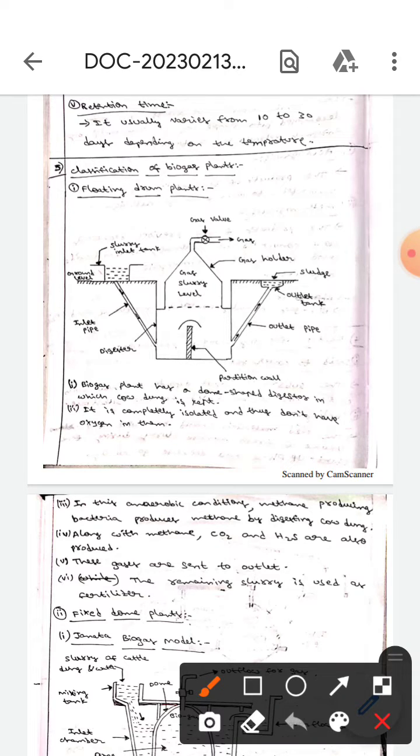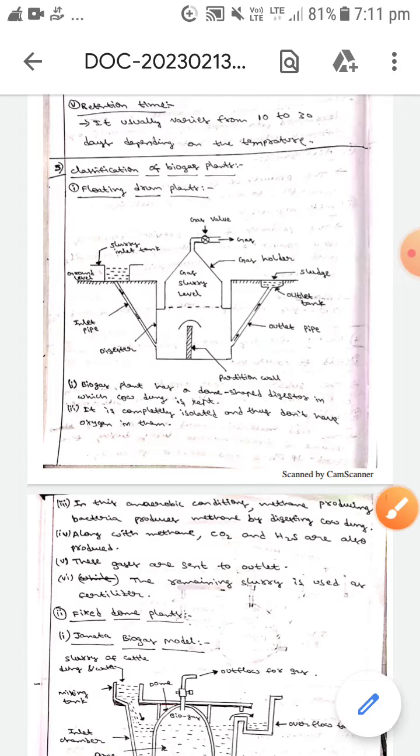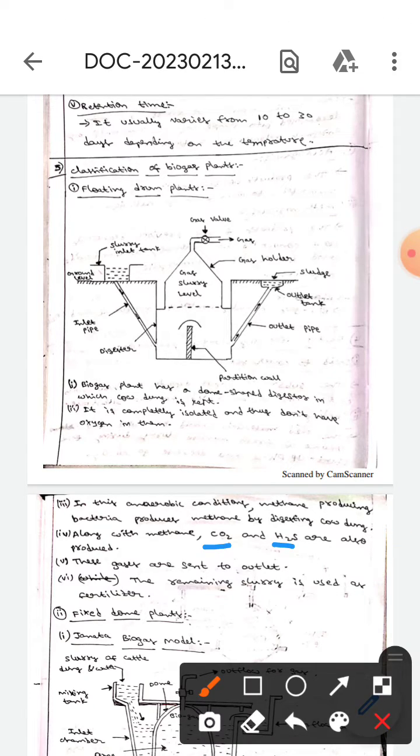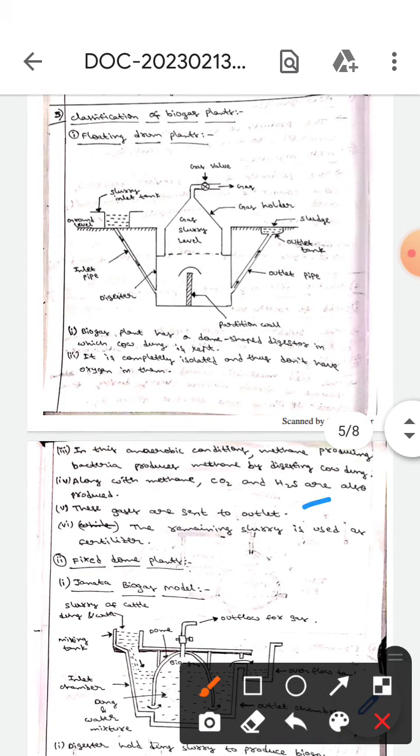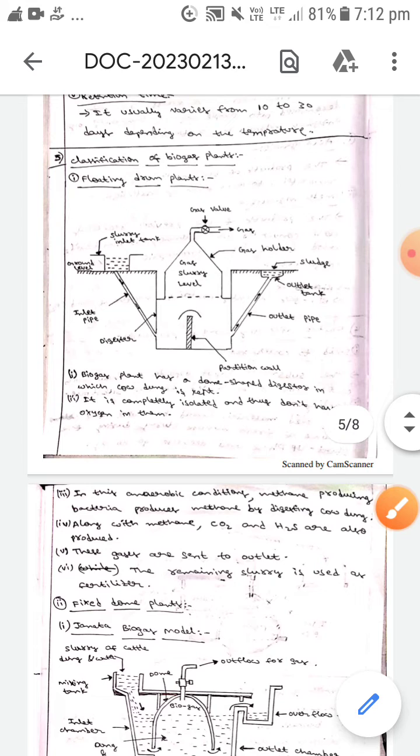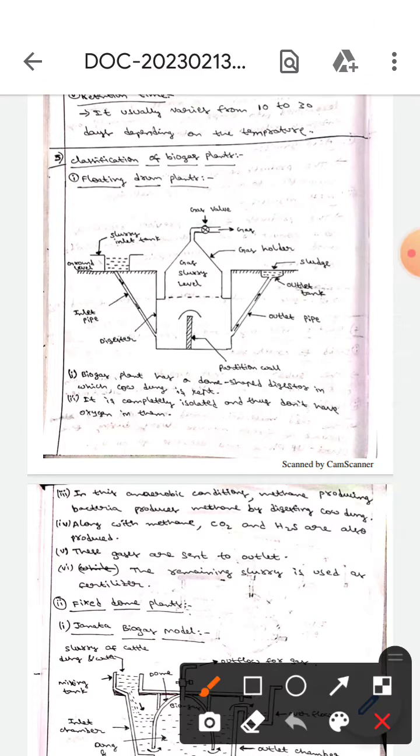to the outlet, whereas the remaining slurry is used as fertilizer. This is all about the floating drum plants. The next one is fixed dome plants. Here, there are two types. The first one is Janata